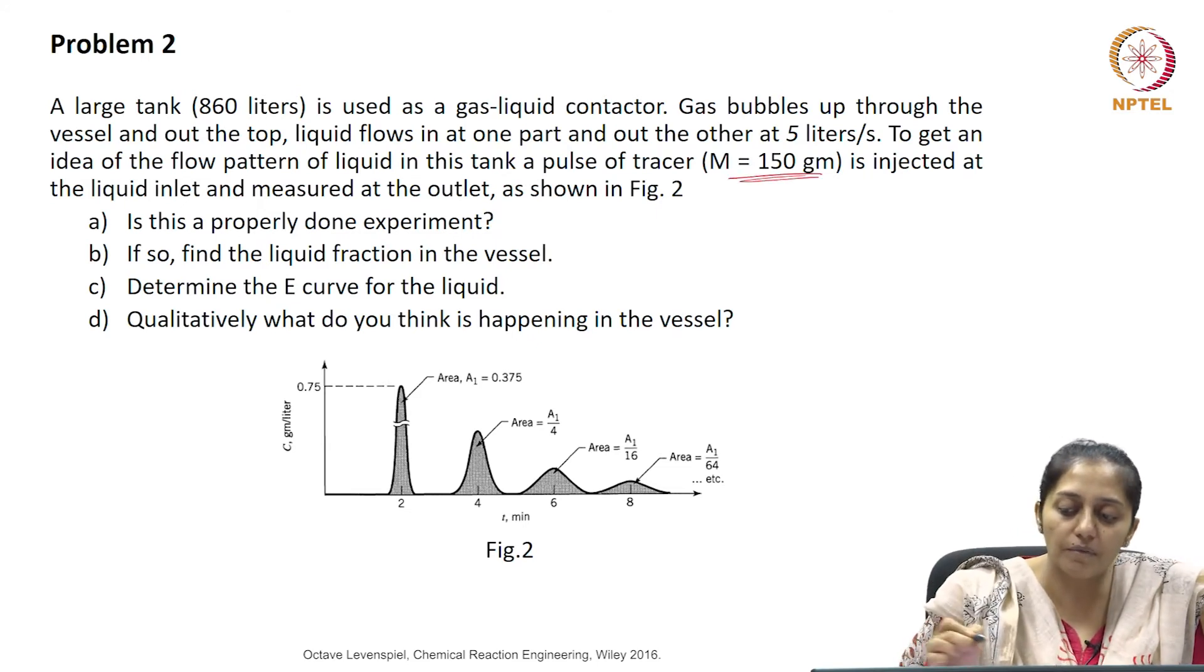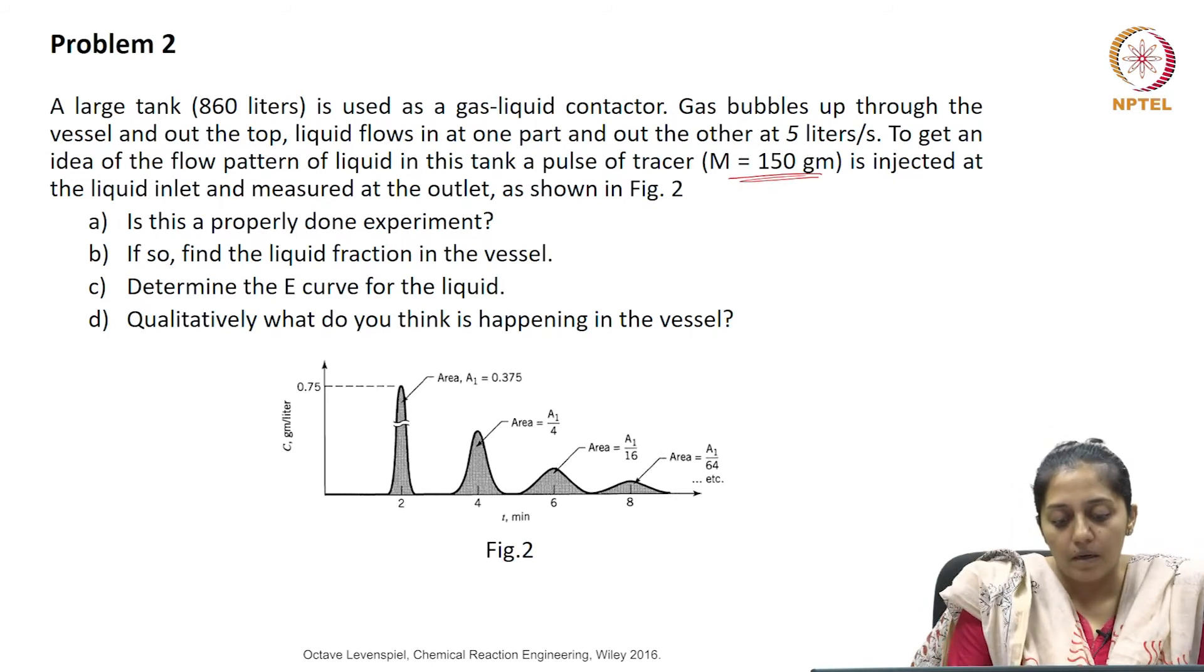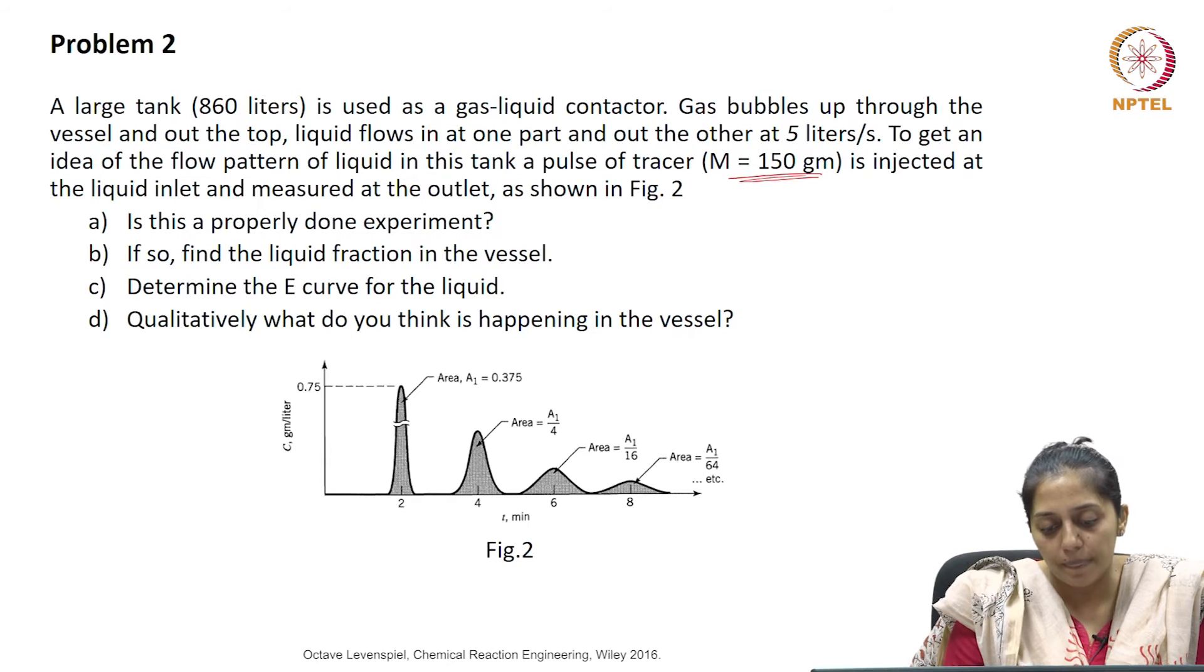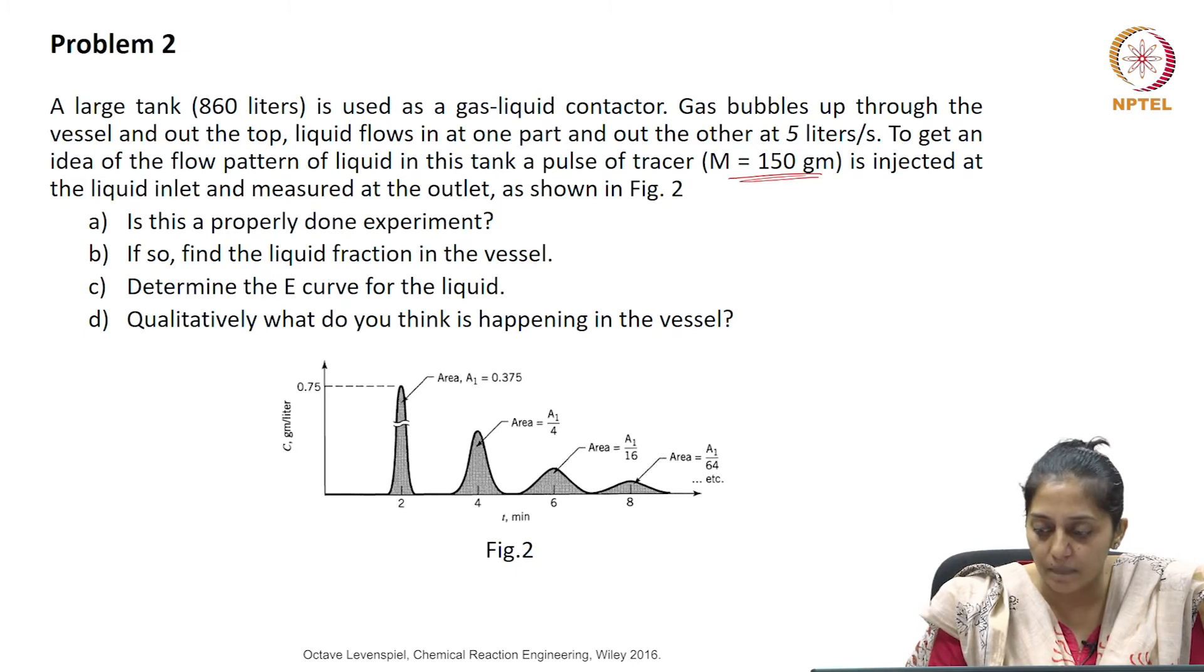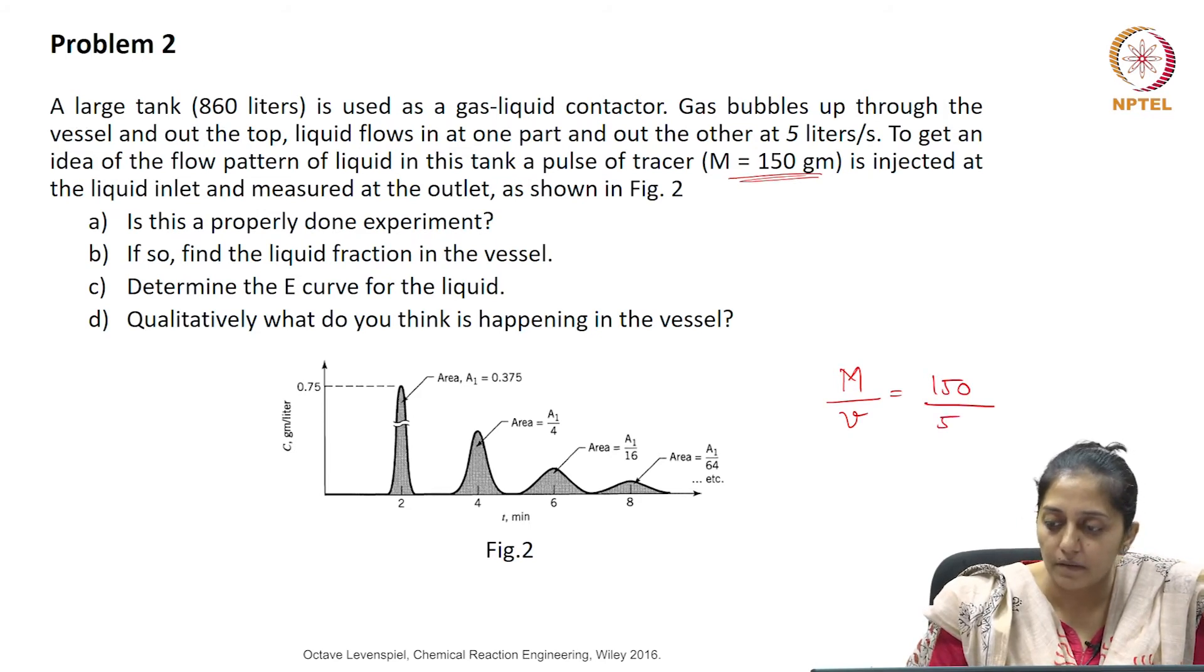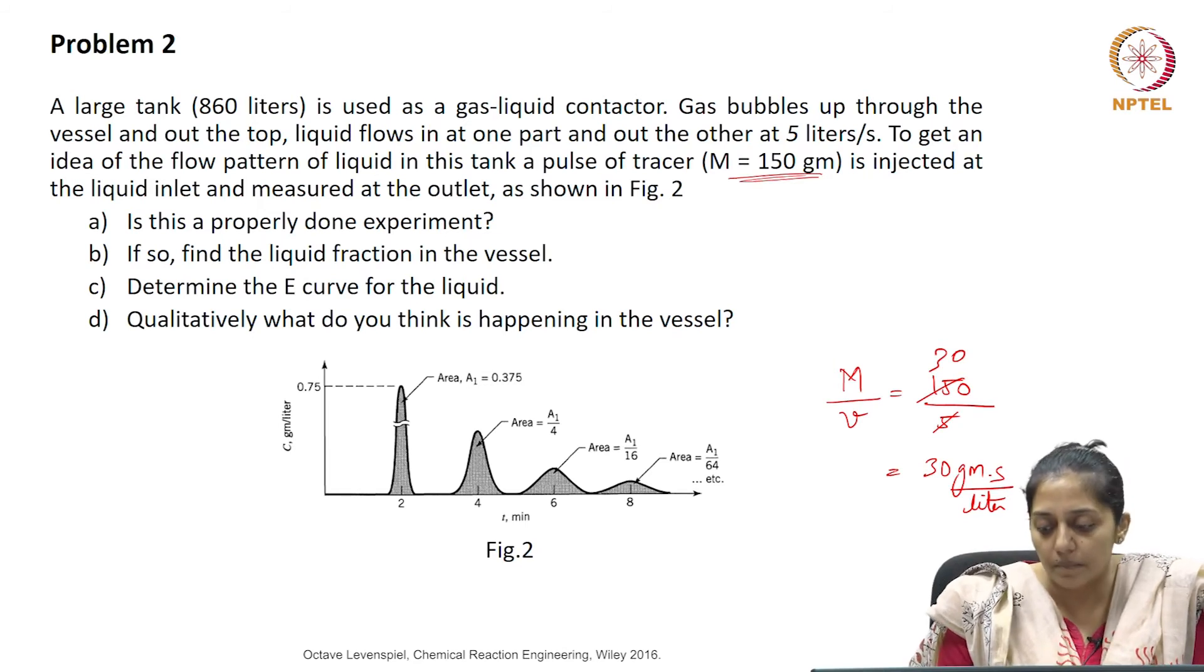In order to check that this is a properly done experiment, we can do a material balance over the tracer. We know the total amount of tracer is 150 grams. The concentration curve is given to us. So sum of area of all the C curve which is given here will equal capital M by small v. Small v was the volumetric flow rate which is 150 by 5 liters per second. This value comes out to be 30 grams second per liter. If we find the sum which is a1 plus a1 by 4 plus a1 by 16, a1 by 64 and so on.